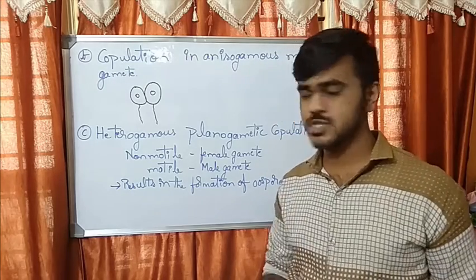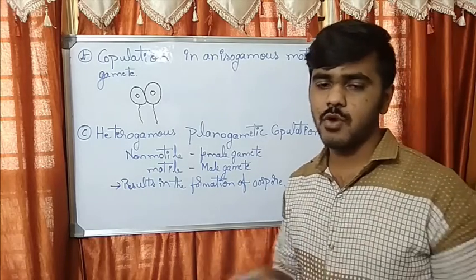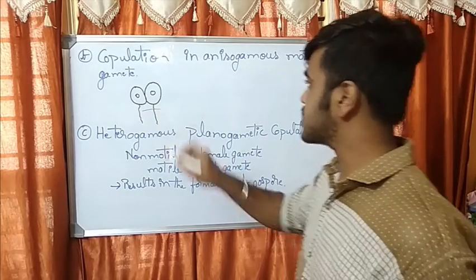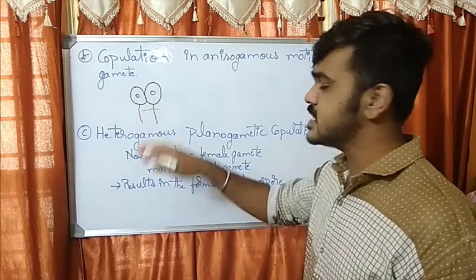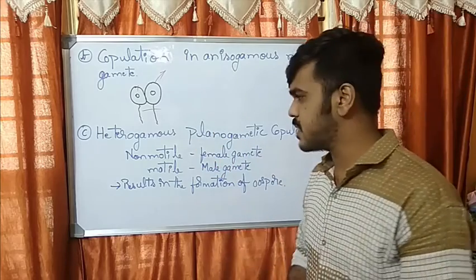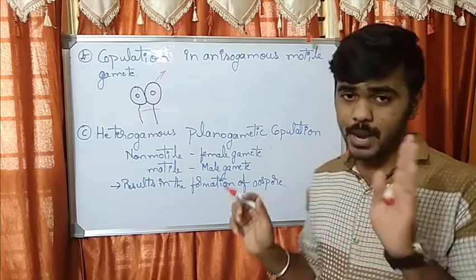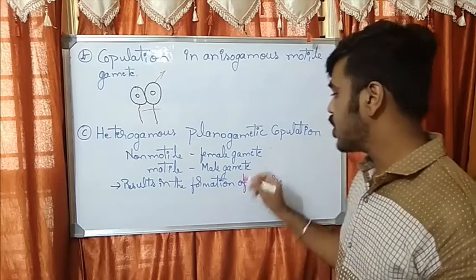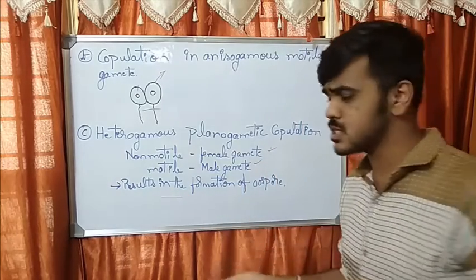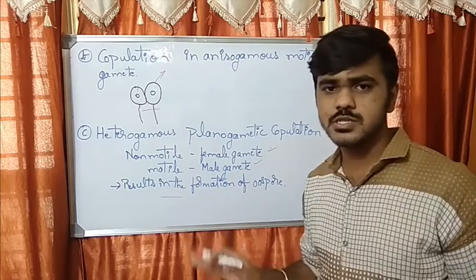The next type in planogametic copulation is copulation in anisogamous motile gametes. Here both are motile, but morphologically dissimilar — one is large in size and one is small. The third condition is where at least one planogamete is involved: one motile male gamete fuses with a non-motile female gamete. This usually results in oospore formation — these are resting spores that later germinate. These are the three conditions in planogametic copulation.